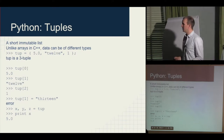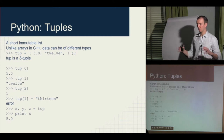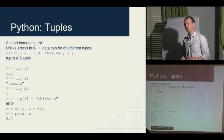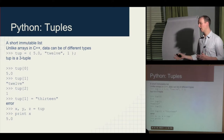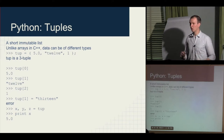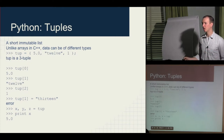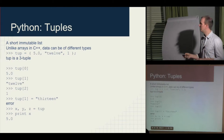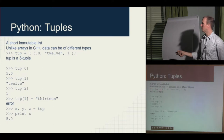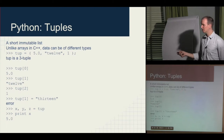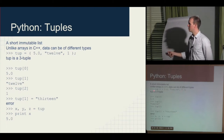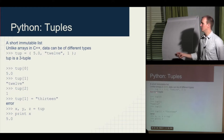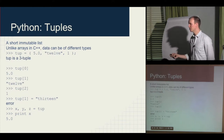Tuples are short, immutable lists. You can't change them once you create them, but you can treat them like arrays — you can iterate across them. There's no strict typing, so you don't have to have all the same type in each position. For instance: tup = (5.0, '12', 1). Python's totally happy to let you do that. What you've created is a three-tuple — it has three things in it. You can have two-tuples, n-tuples.